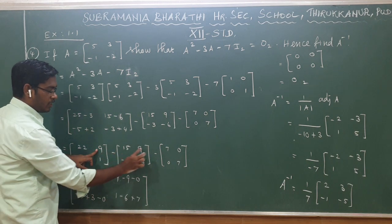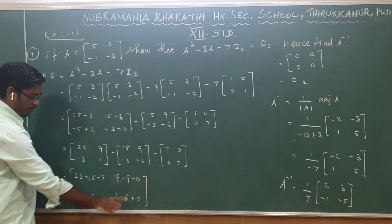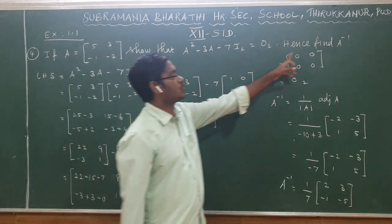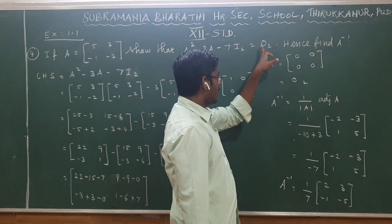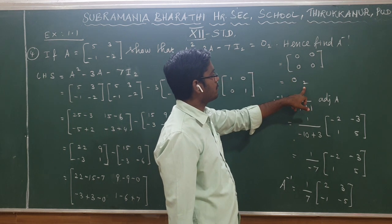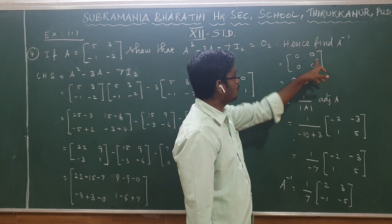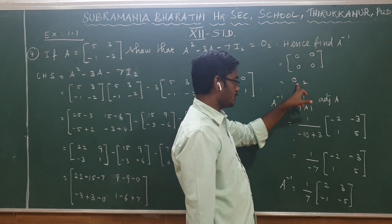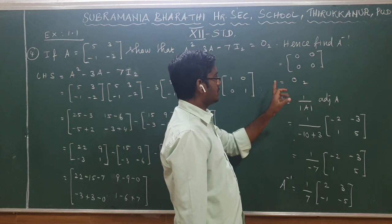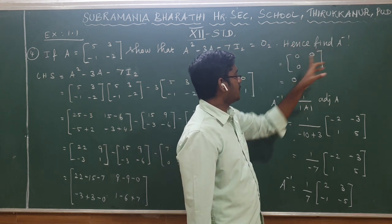After performing the matrix multiplications and carrying out the addition and subtraction, simplifying each term, the result is the zero matrix — all entries are 0. This completes the proof for the 2×2 case. Next, we find A inverse.